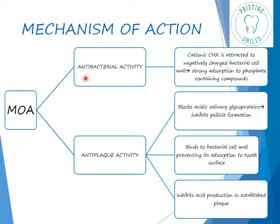Now chlorhexidine shows two actions: antibacterial activity and anti-plaque activity. The cationic chlorhexidine is attracted towards the negatively charged bacterial cell wall. It absorbs onto the phosphate-containing compounds present in the cell wall, altering the integrity of the cell wall. For anti-plaque activity, understand that for plaque to form, a pellicle must form, bacteria must bind to the tooth surface, and there must be acid production. Chlorhexidine inhibits pellicle formation by blocking acidic salivary glycoproteins, binds to the bacterial cell wall preventing its adsorption onto the tooth surface, and inhibits acid production in established plaque.